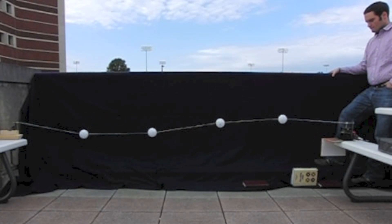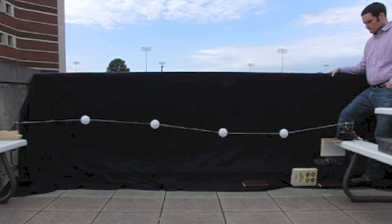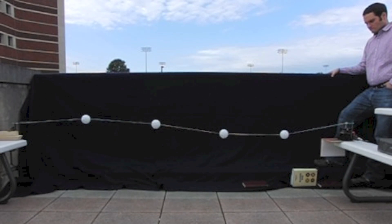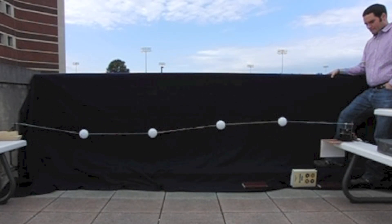In the second natural mode, there is a node at the very center of the system and the two halves of the system, the right half and the left half, move in opposite directions.